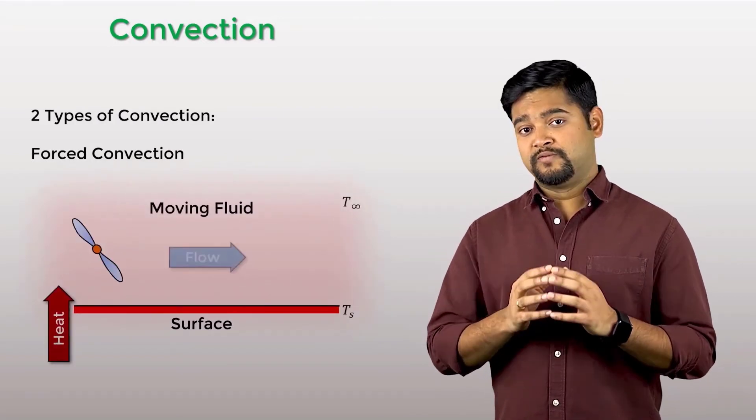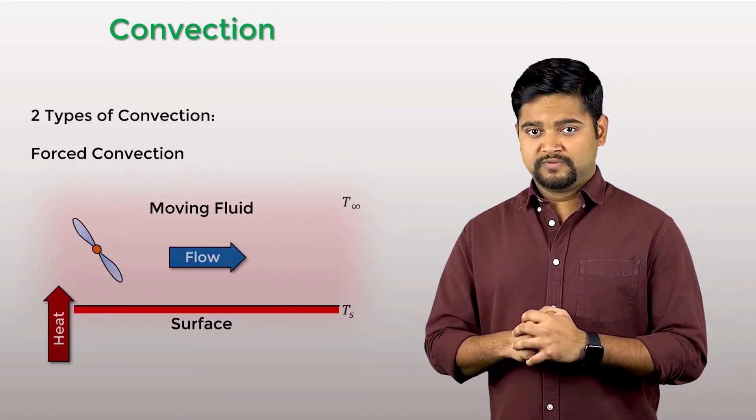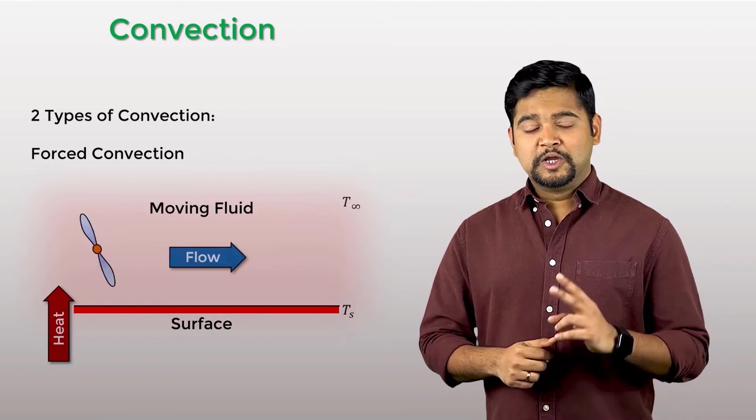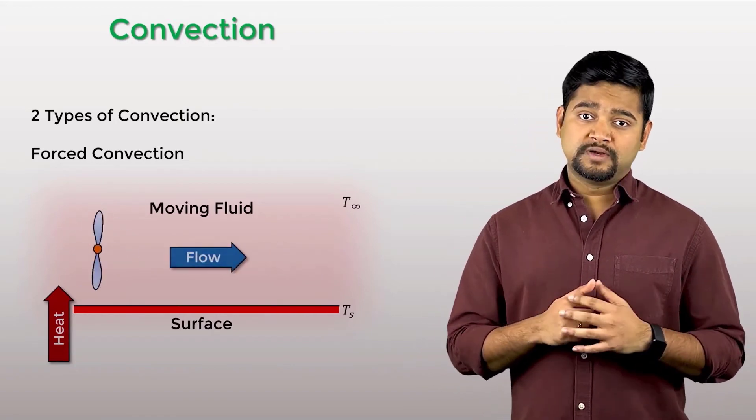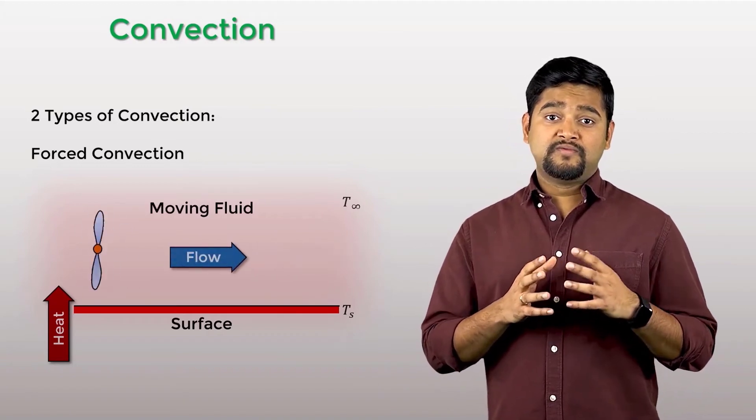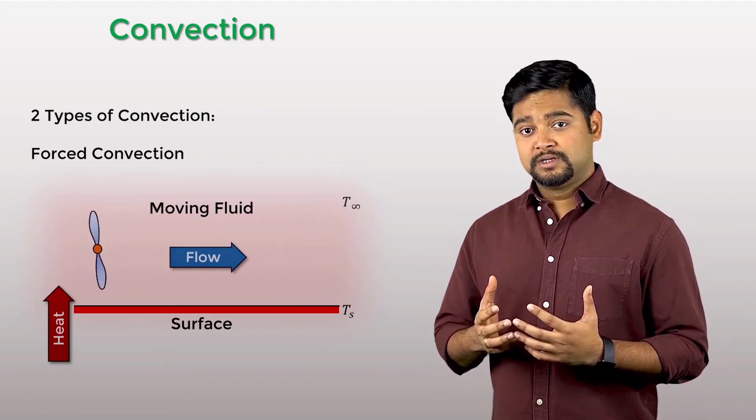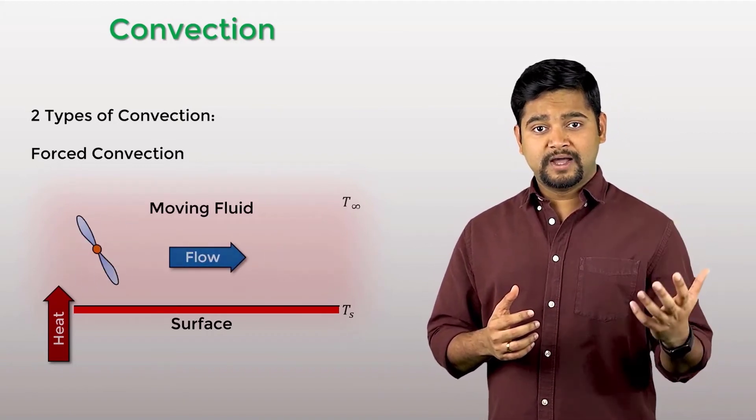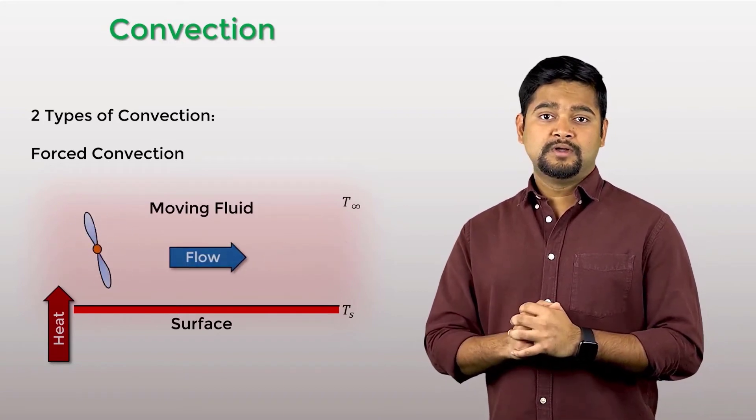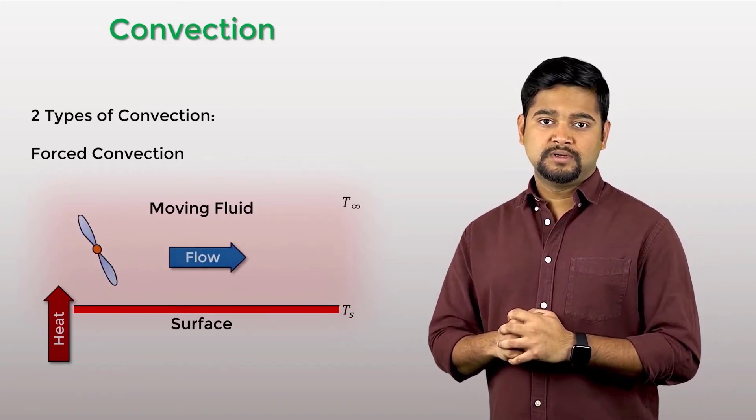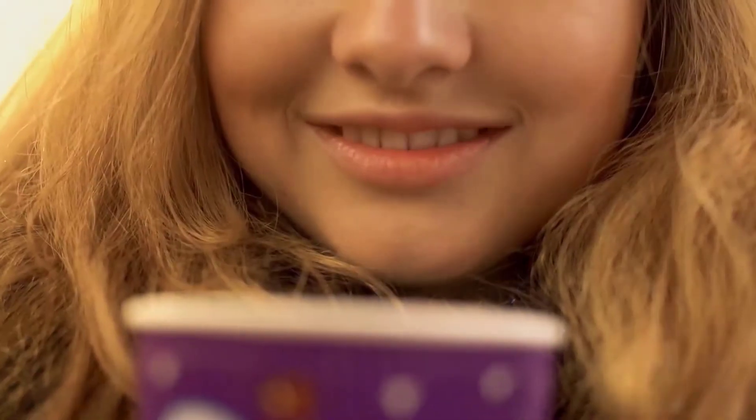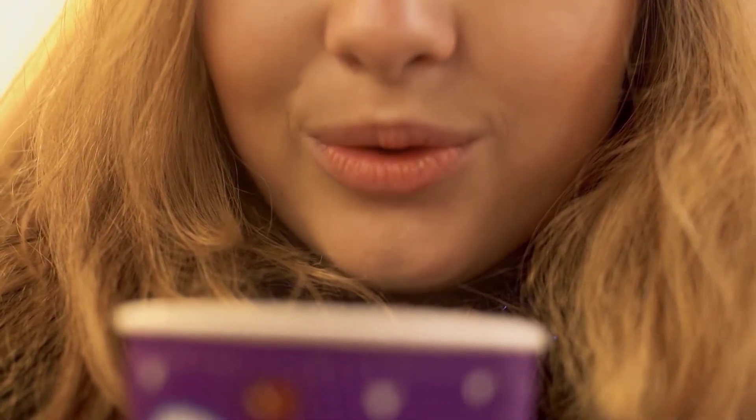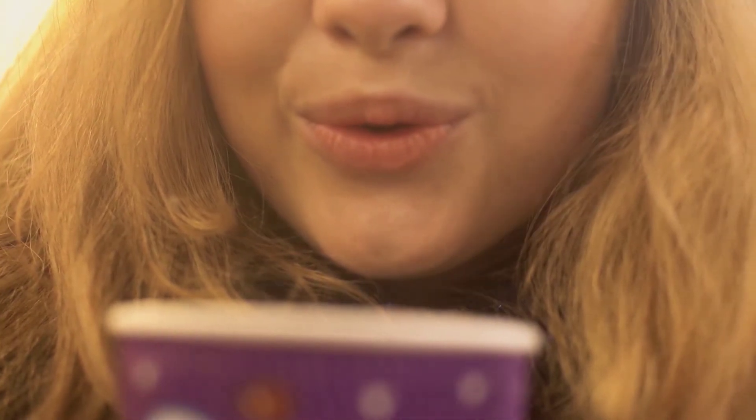Based on the nature of the fluid flow, convection heat transfer can be classified into two categories. The first type is known as forced convection, where the flow is caused by external means, such as by a fan, a pump, or atmospheric winds. Remember that cup of hot coffee? Blowing air over it to cool it down, that's basically forced convection.